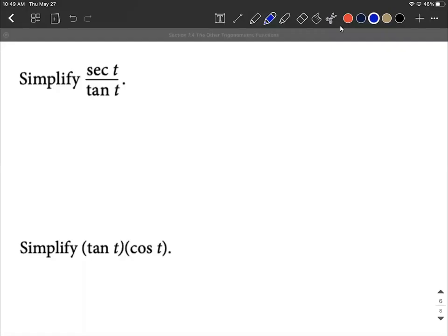Simplifying trigonometric expressions. As we get going on simplifying these, what I always suggest is rewrite everything in terms of sine and cosine. Typically this is going to require using our quotient identities and our reciprocal identities.